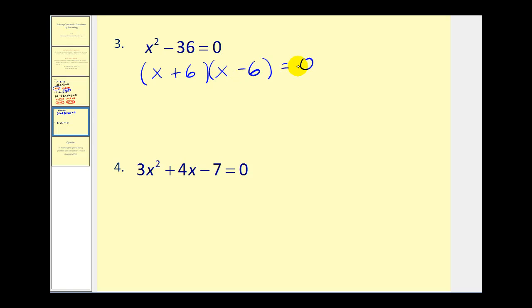Again, these are being multiplied together. Product is zero, so either x plus six equals zero, or x minus six equals zero. Solving this for x, we'll subtract six on both sides. And adding six on both sides here, we have x equals six.